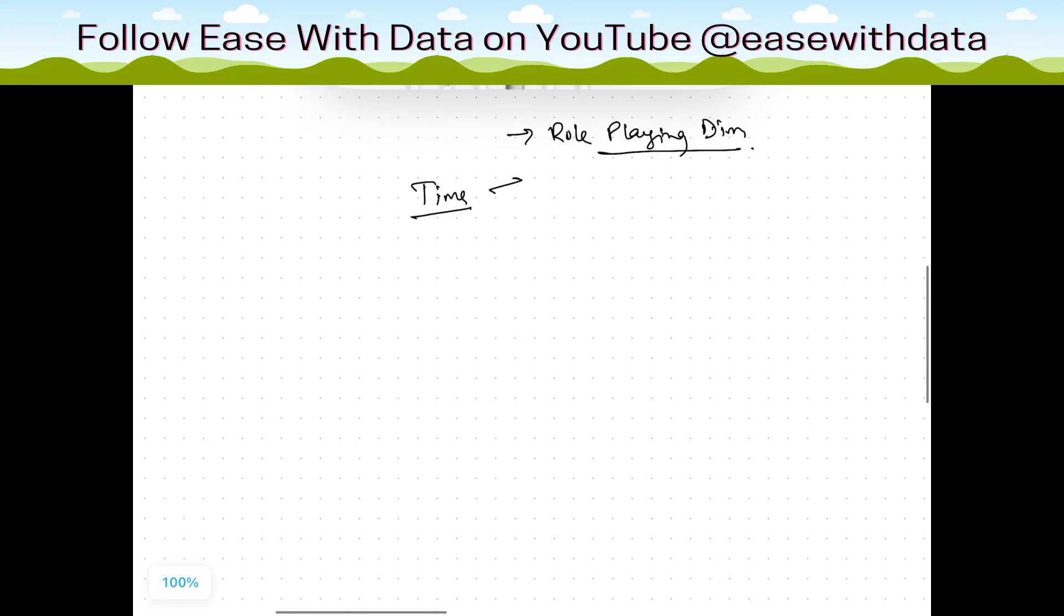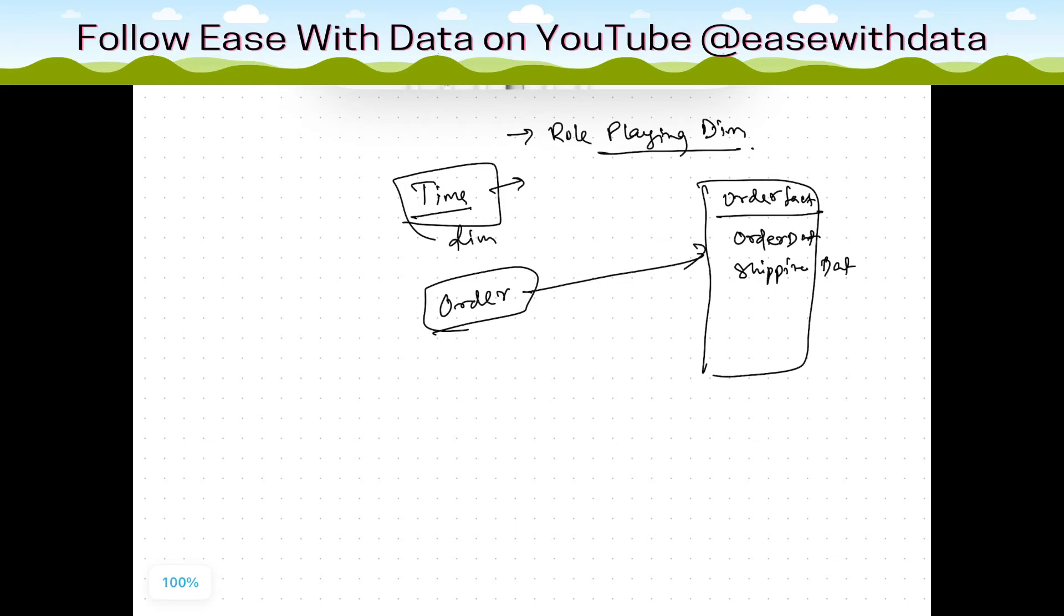Other than this we have one more type of dimension which is called role-playing dimension. So what happens is in role-playing dimension, basically the same type of dimension - consider time - is playing multiple roles. So consider we have order fact. Now we can have order date and we can have shipping date. So the same time dimension can once be an order date and it can act as a shipping date as well. So the same dimension is playing multiple roles for the same fact. Thus this type of dimensions are called role-playing dimension.